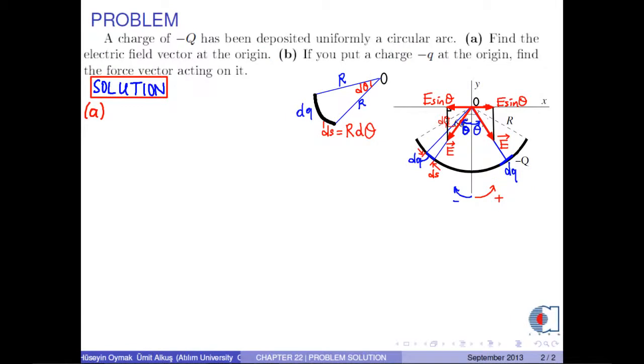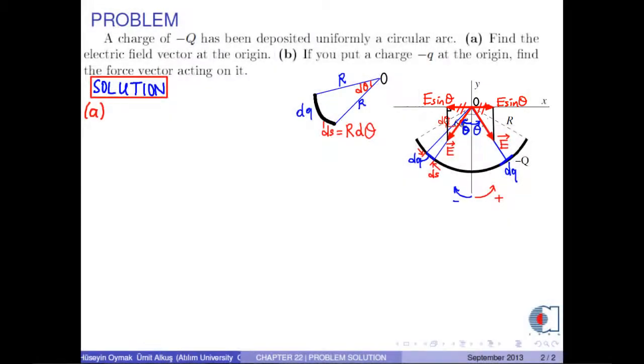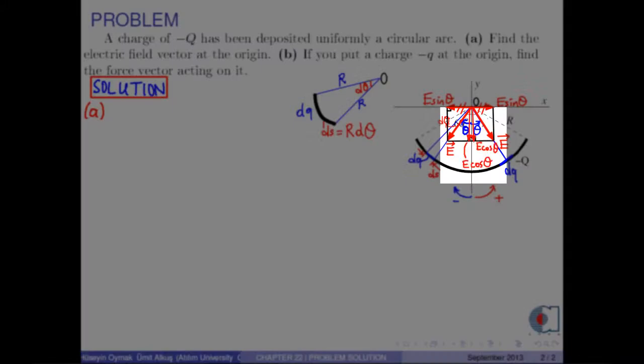And due to symmetry, their x-components, e times sinθ, cancel each other. Thus, we are remained with their y-components, which are e times cosθ.